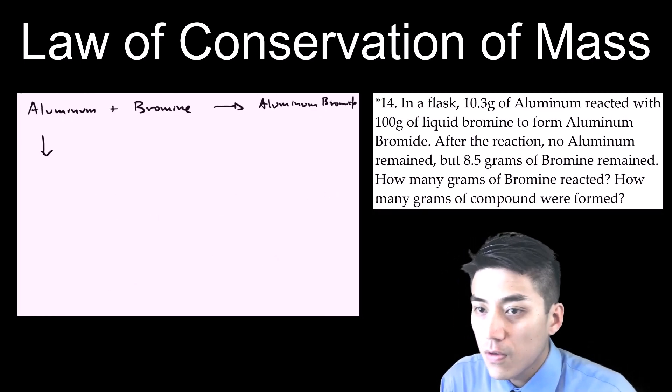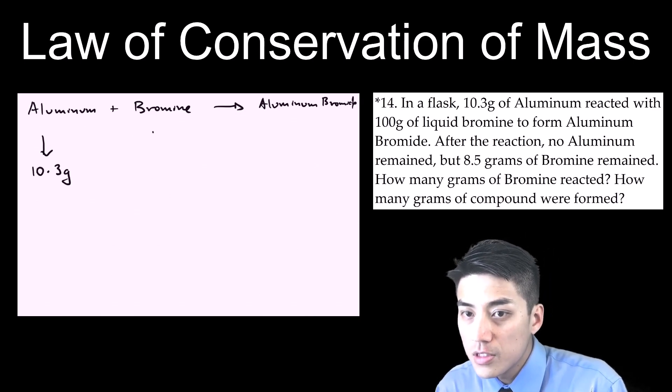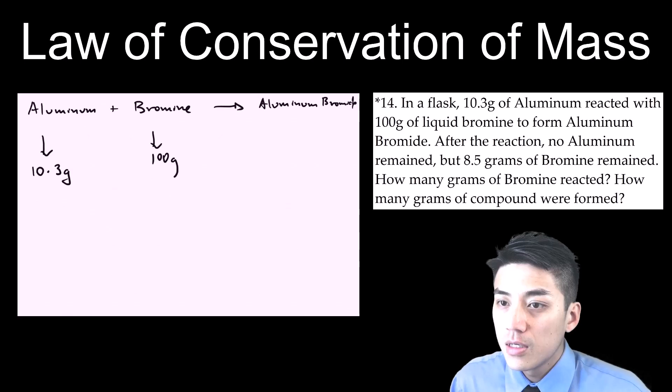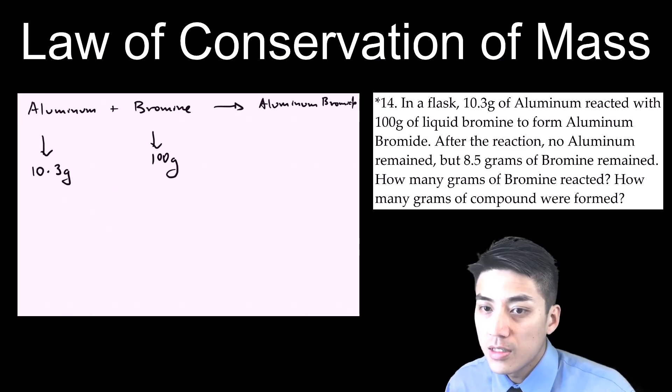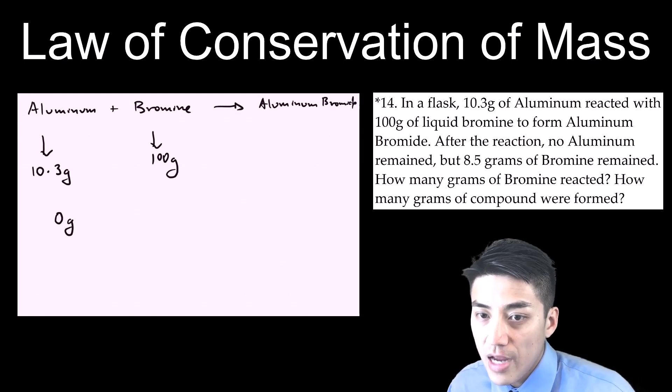Number 14 requires you to be a little bit craftier. So I've written down the equation. Aluminum plus bromine yields aluminum bromide. And they tell you you start with 10.3 grams of aluminum, 100 grams of bromine. And there's also other information that's provided. So after the reaction, zero grams of aluminum remained.